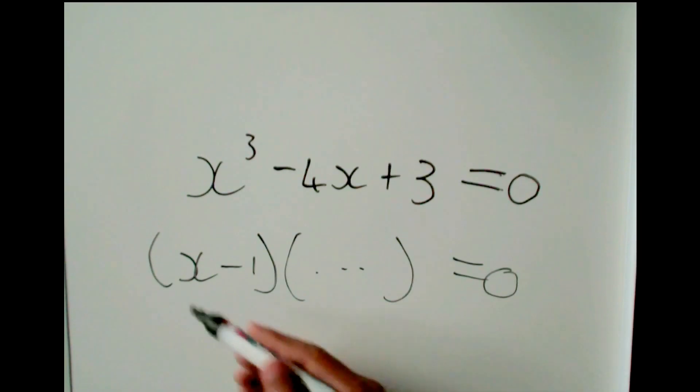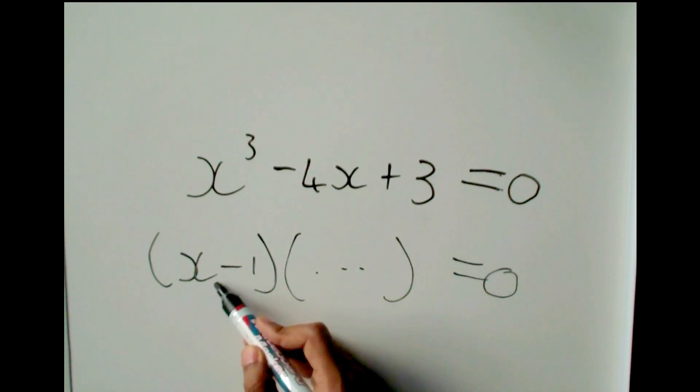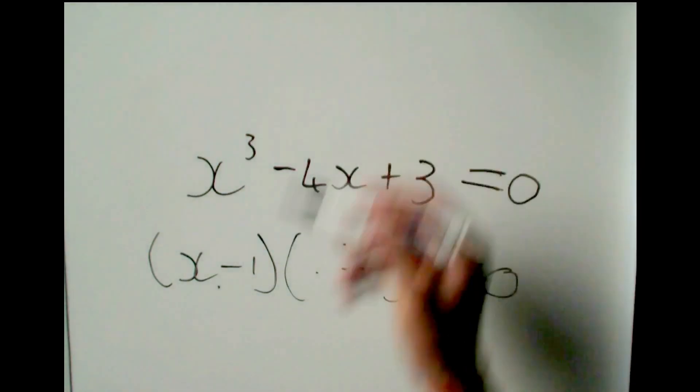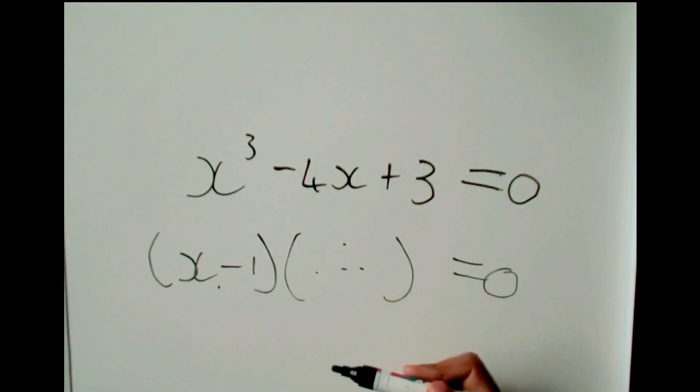So now that we have this factor, and we had to guess, there's no better way to do it, we're going to have to guess a number that works. Now that we have this equation here, we're going to find this. And that's where the kx method comes into play. The other method is dividing out the first factor, but you still need to guess the first factor.